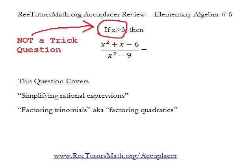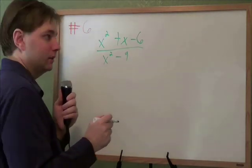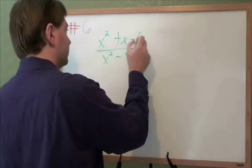When this problem says if x is greater than 3, that's basically just them saying that this is not a trick question that we're not ever dividing by 0. So if it confuses you, just ignore it and work out the problem the way that you usually would. In order to simplify this, we need to start by factoring it. And before we can factor it, let's write it a little bit better.